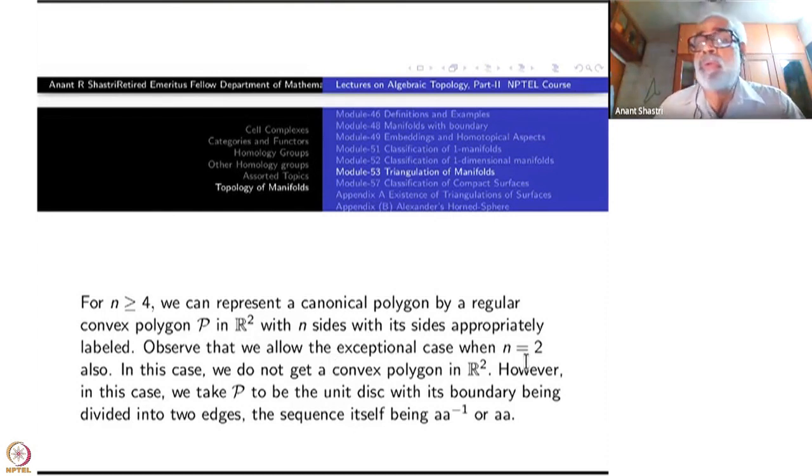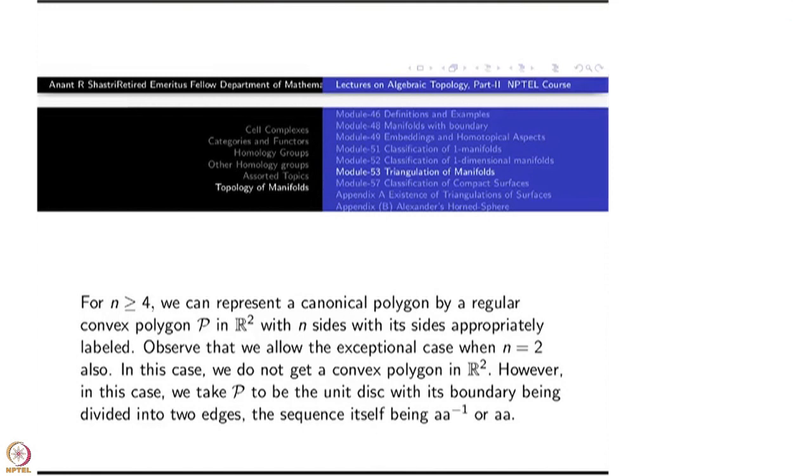Observe that we allow the exceptional case N equal to 2 as well. So we have to allow. In this case, we do not get a convex polygon in R2. So what do we do? We get a convex set. Namely, you will take a disc. On that disc, you can divide the boundary into 2 semi-arcs, semi-circular arcs. And then label them as A, A or A, A inverse. So that is the case N equal to 2. Of course, N equal to 0 doesn't occur because it has to be non-empty convex polygon.